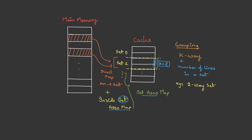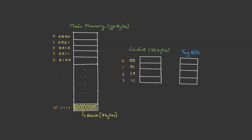Set associative is actually better than full associative mapping. To understand this, let's take a previous example: we have 128-byte memory, cache size is 32 bytes, and block size is 8 bytes. Number of blocks will be memory size divided by block size — that is 128 divided by 8, which is 16 blocks. Number of lines is cache size divided by block size — that is 32 divided by 8, which is 4 lines.